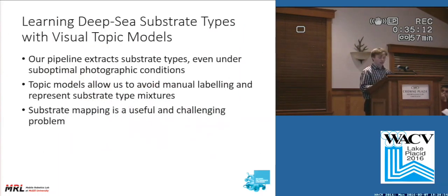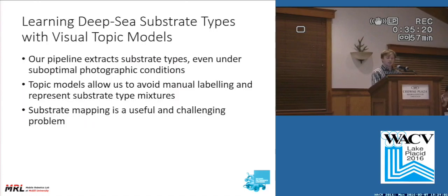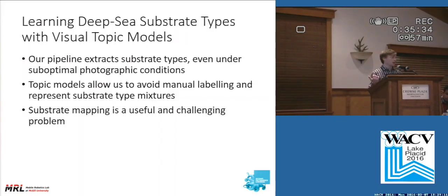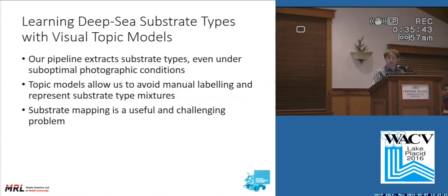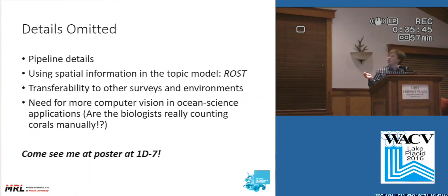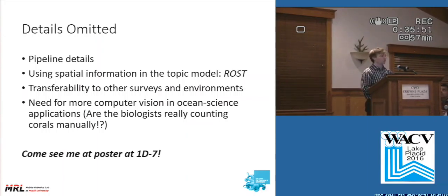So I hope you'll take away three points from this talk. First of all, our project was to build a pipeline to learn substrate types from ROV video that will work even under suboptimal photographic conditions. Second of all, we achieved this by using a topic model — using a topic model we can estimate the mixture of substrate types rather than a single label, and we don't need any training data. And finally, I hope you'll agree that substrate mapping is useful across fields in ocean science and it's challenging from a computer vision perspective. If you have any questions or comments, please come see me at poster 1D7.